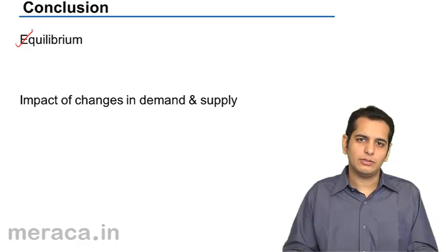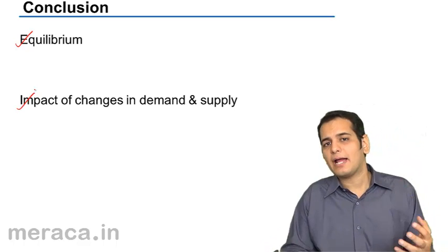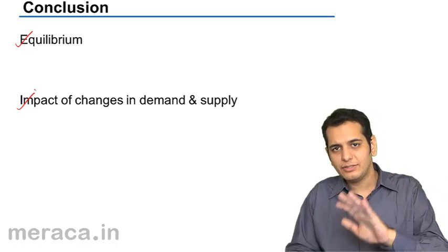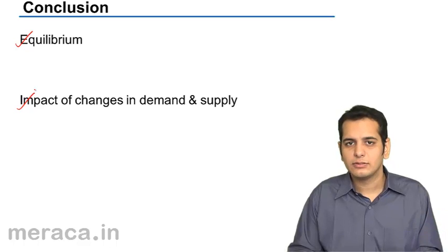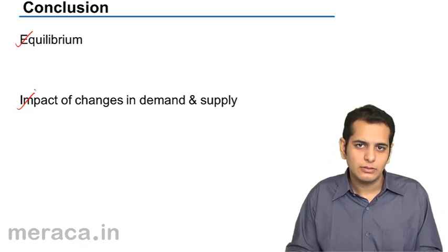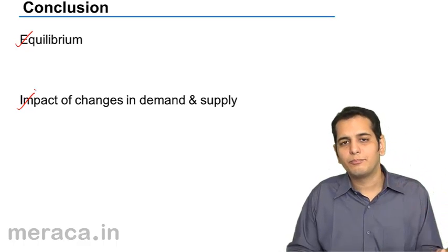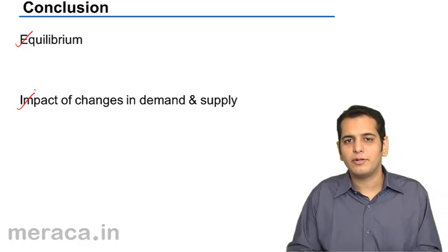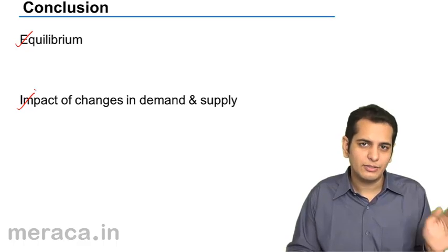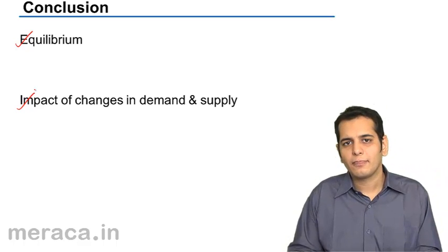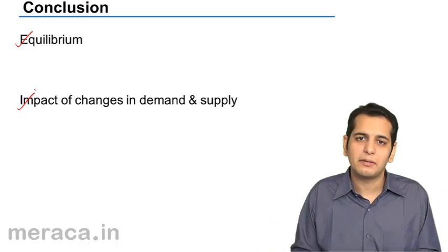We then studied the impact of a change in demand or a change in supply on the price. We studied this in two parts: the first part covered the impact on price brought about by a change in only one element — either demand or supply — and the second part covered the change in both demand and supply simultaneously.